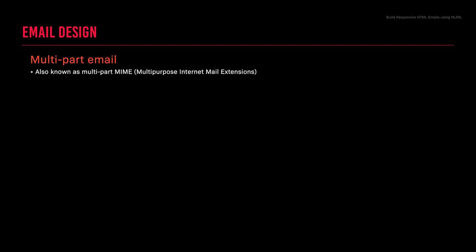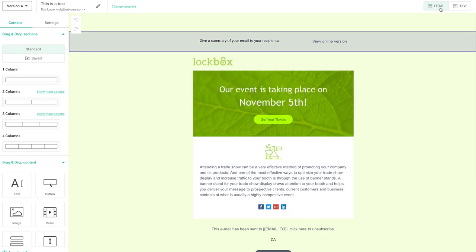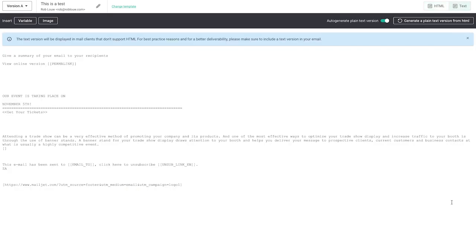So what's a multi-part email? A multi-part email, also known as multi-part MIME (Multi-Purpose Internet Mail Extensions), bundles a simple plain text version of your email along with the HTML version. Email clients that can't display HTML will display the text version instead. It's recommended that a multi-part email should be part of every email campaign, and luckily most email service providers (ESPs) send multi-part emails automatically.